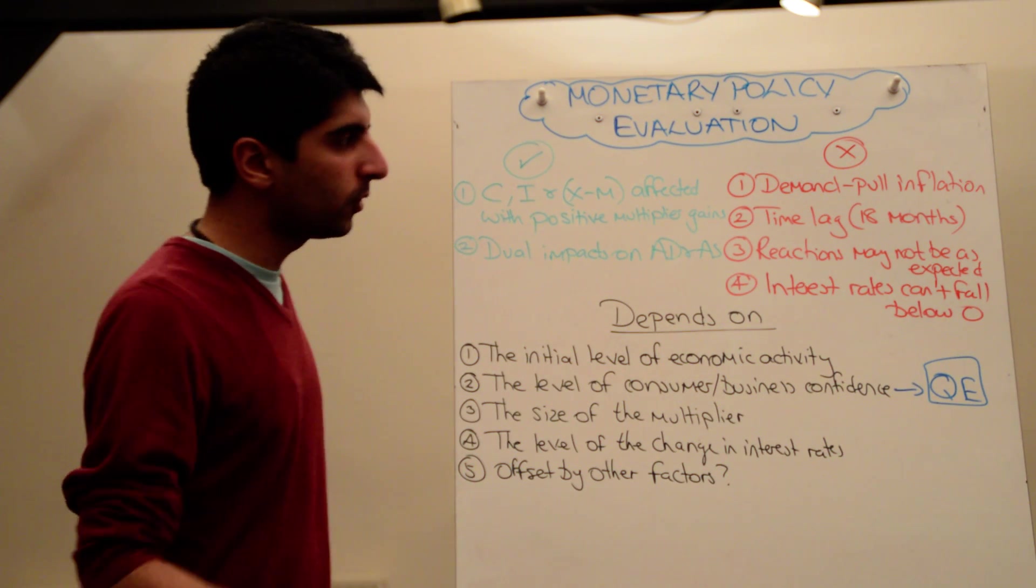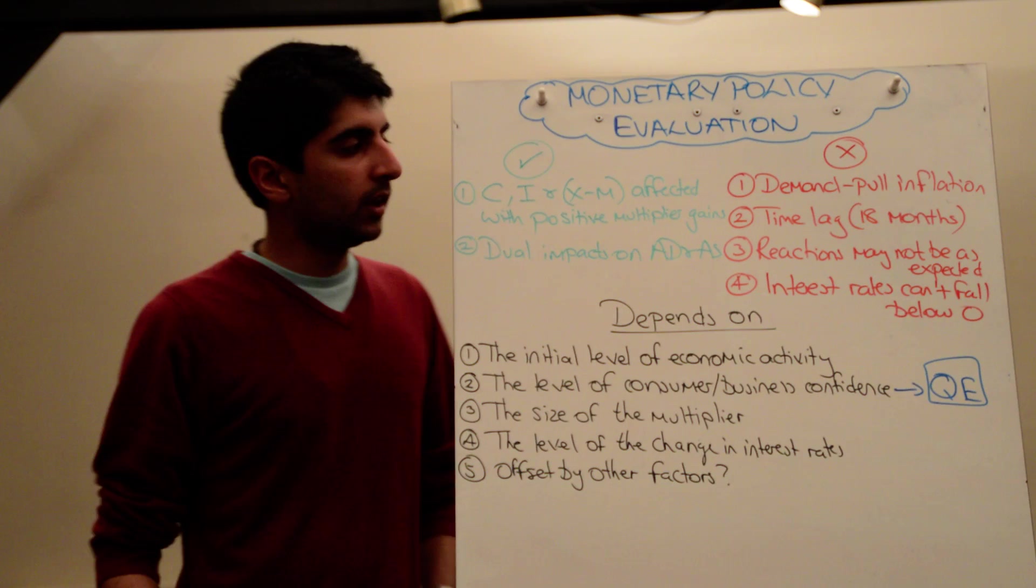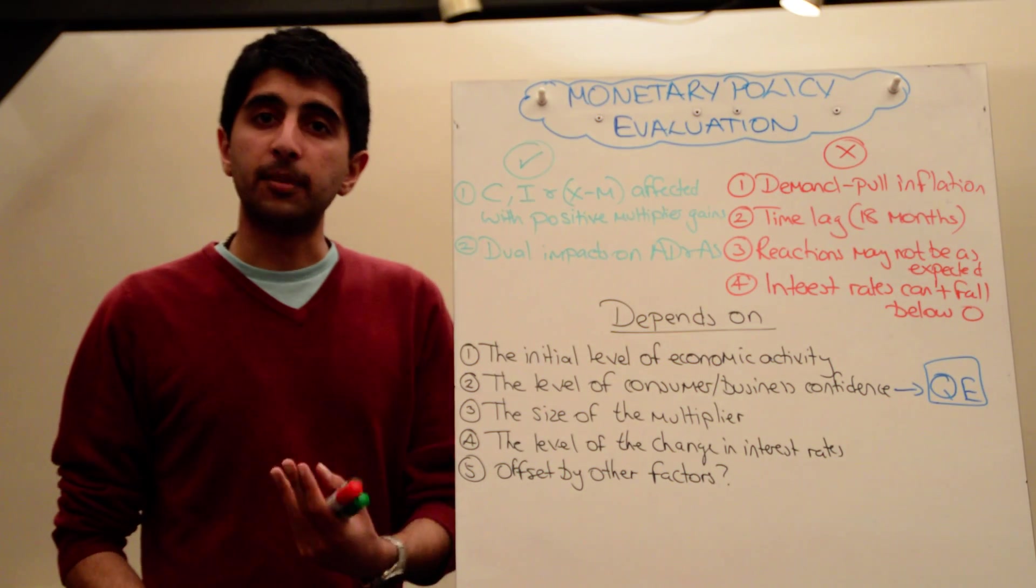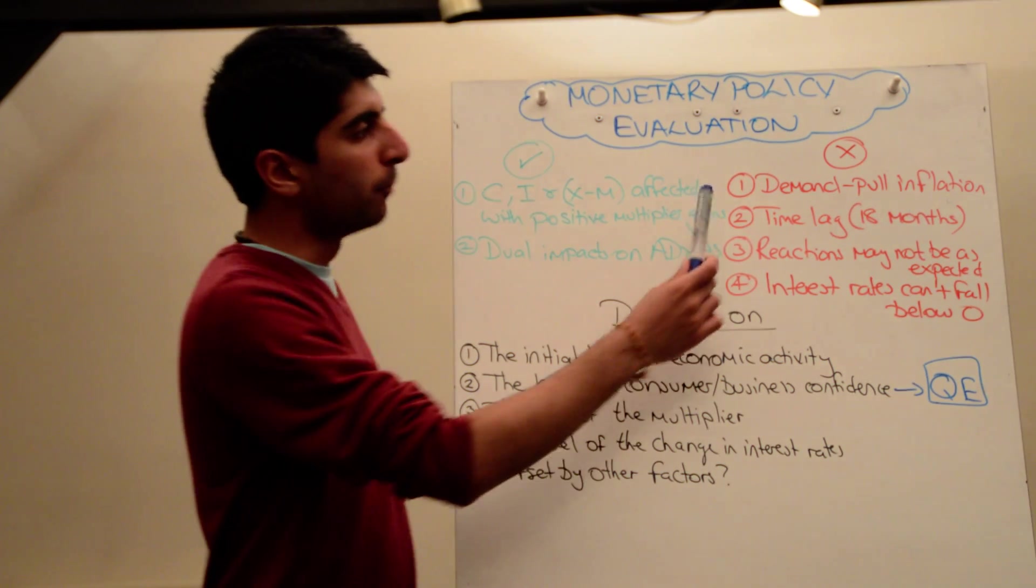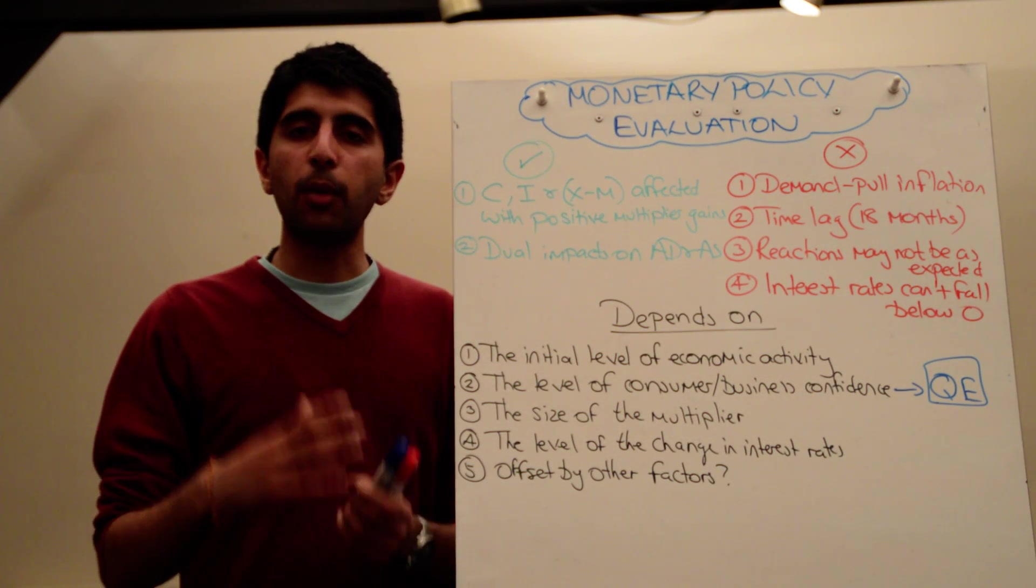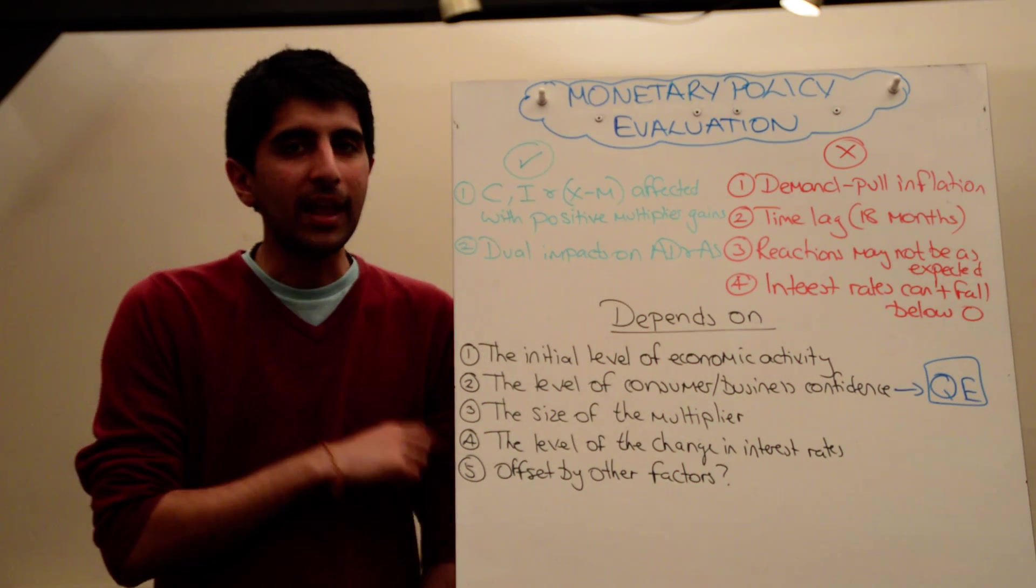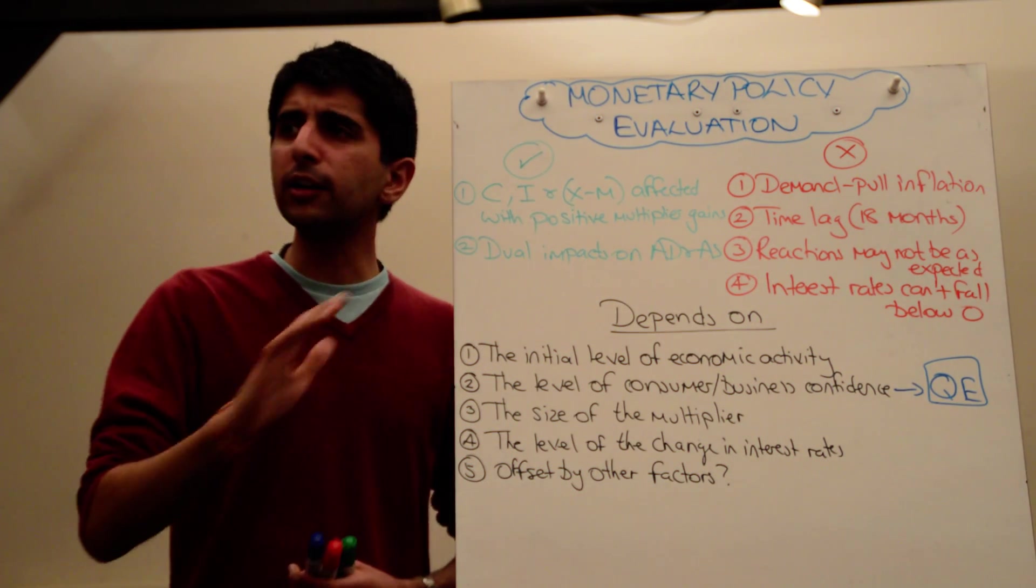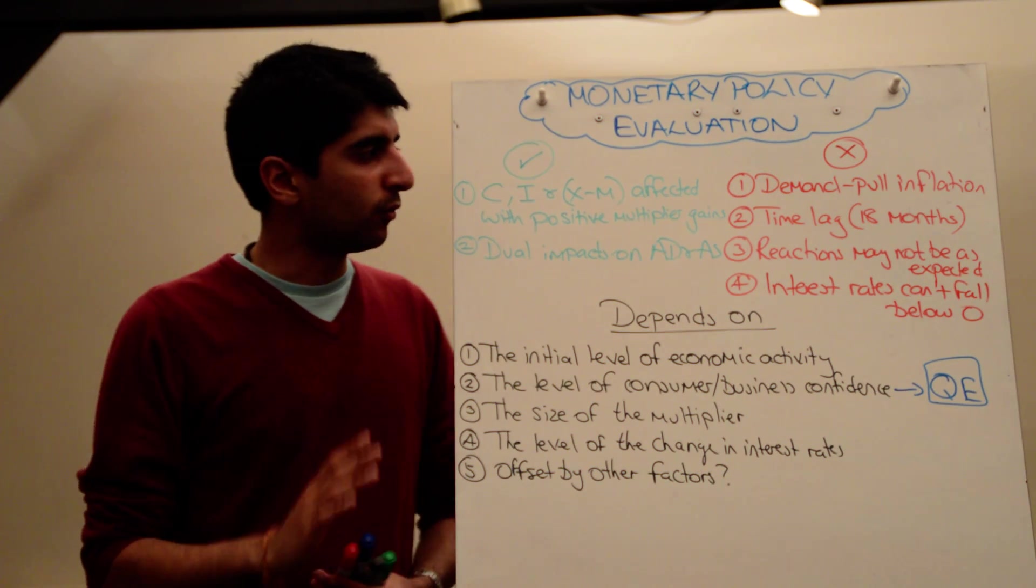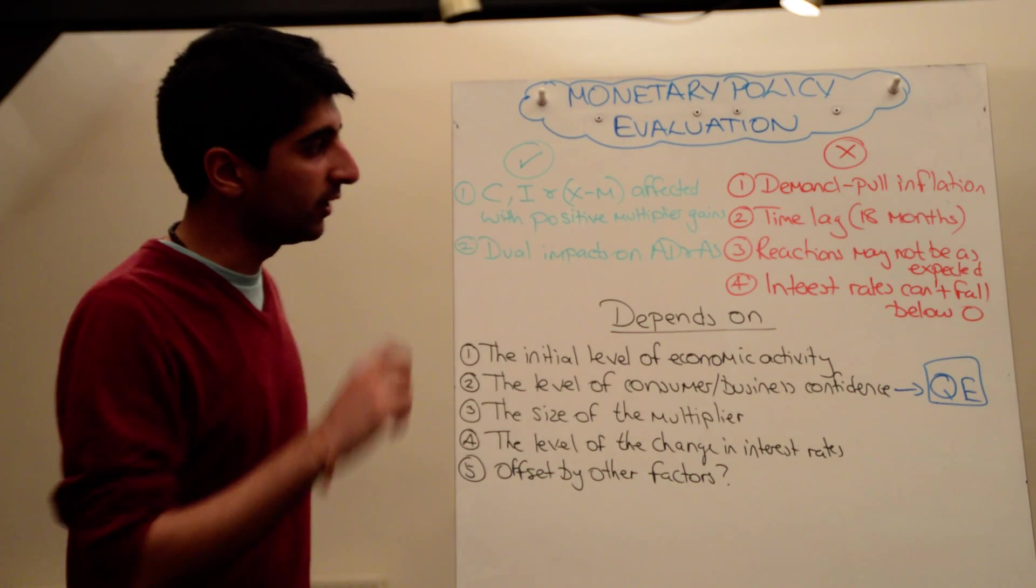But there are some issues with monetary policy too. It can lead to demand-pull inflation. So when aggregate demand increases, there is demand-pull inflation repercussion. More worryingly, if let's say aggregate demand is to be boosted by an increase in the money supply, well if that's not controlled, that can lead to rampant inflation, uncontrollable inflation, which is not good.